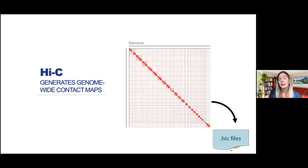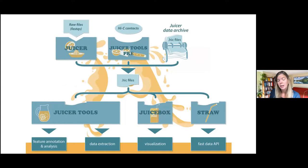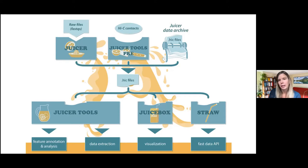We store these contact maps in multi-resolution Hi-C files, which are the center of the Juicebox ecosystem. We have software for going from FASTQs to Hi-C files called Juicer. We have a Juicer data archive, and there are also Hi-C files on ENCODE and GEO. We have various tools for getting data out of Hi-C files, including feature annotation and analysis in Juicebox for visualization. We also have Straw, which is an API for directly accessing the data programmatically so you can do your own analyses in Python or any language you like.